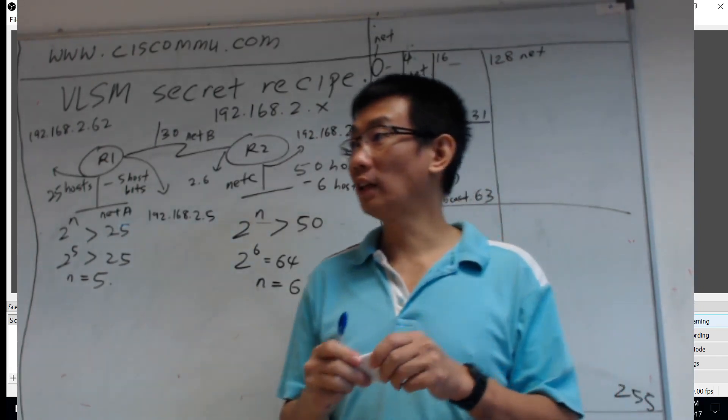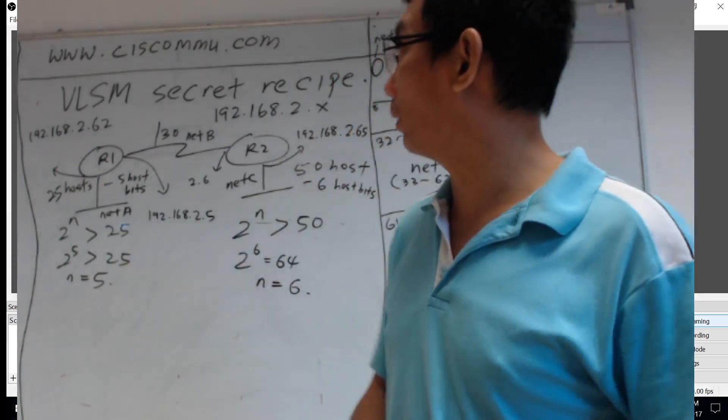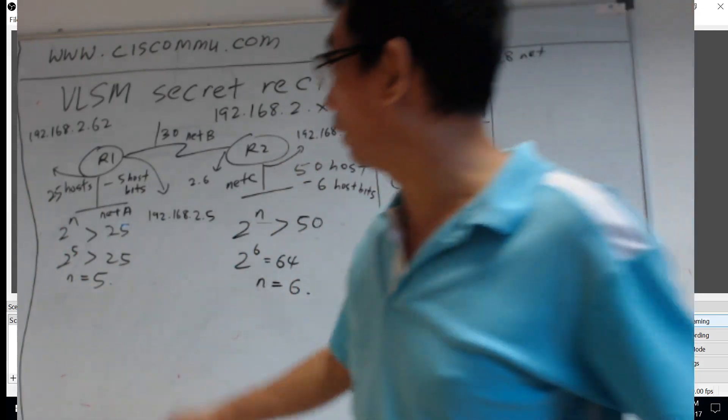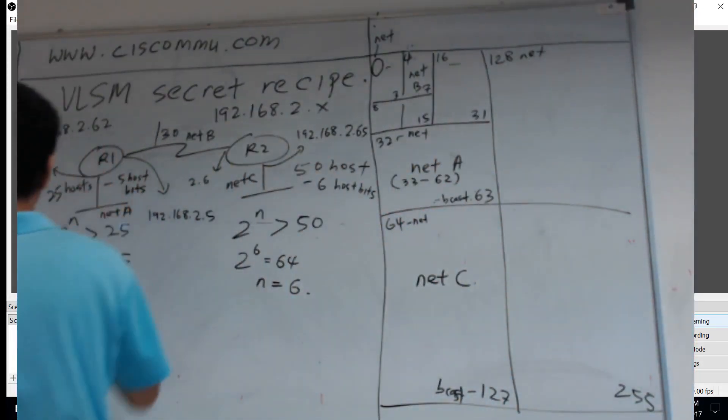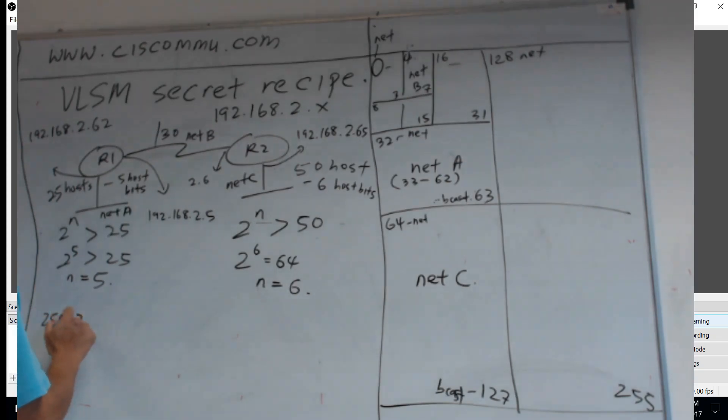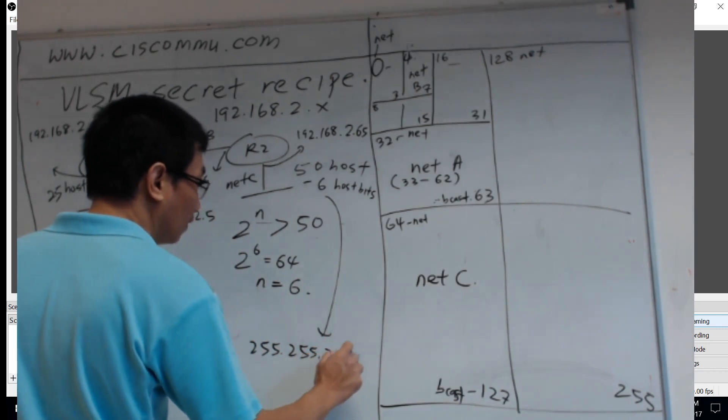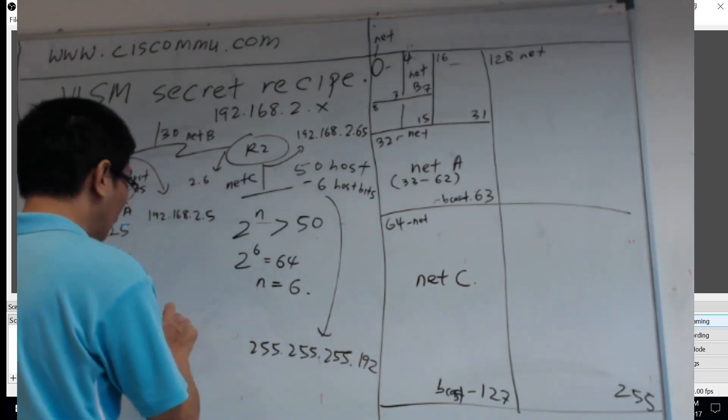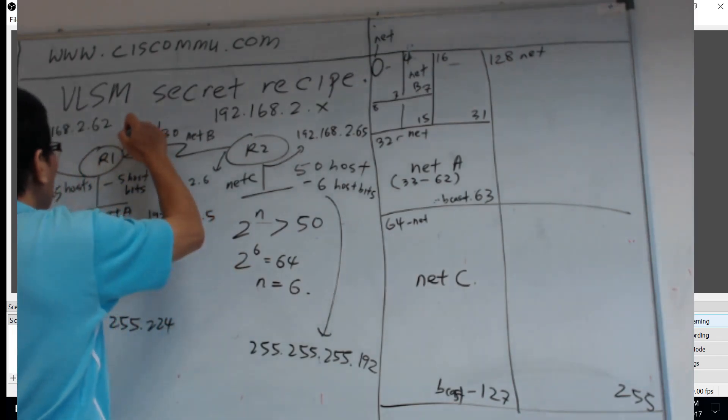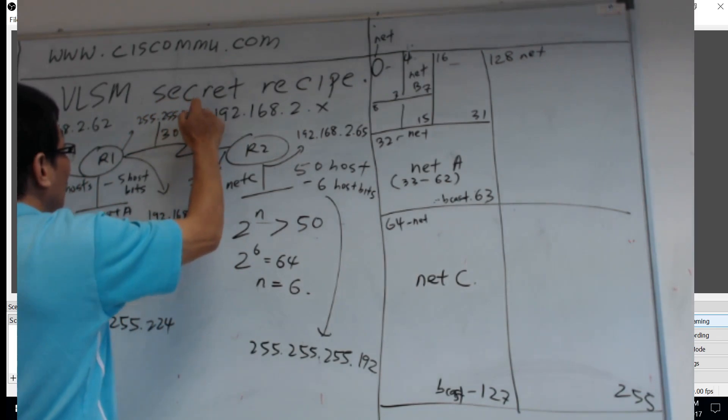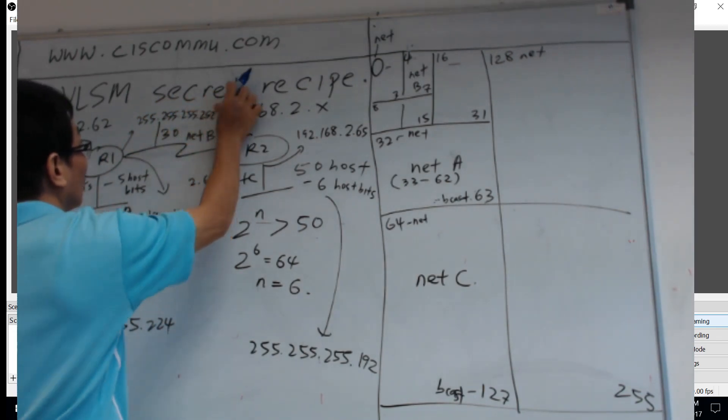Then you can do a little complicated one. So what's the net mask for this one? This is 5 bits here, so the net mask will be 255.255.255.224. This one will be 255.255.255.192. This one will be 255.255.255.252.